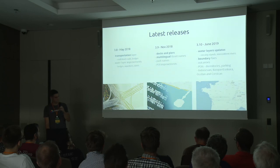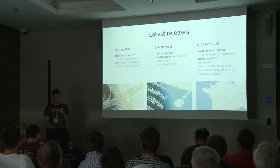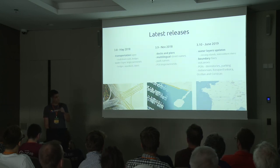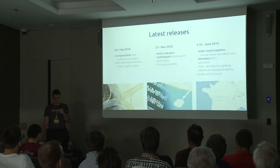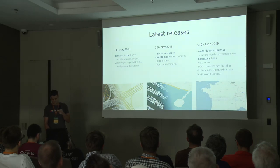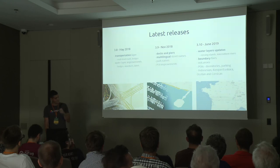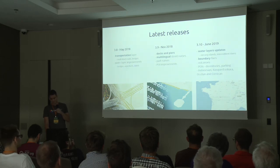Over the last year we've done several releases. In version 3.8 the main change was some improvements on the transportation layer, especially the vertical ordering in very complicated crossroads. In version 3.9 we added docks and piers, and we already had multilingual support for place names in 63 languages. In 3.9 we also added multilingual streets. In the latest release this June, we made some improvements to the water layers, updated boundaries, and added some minor points of interest.